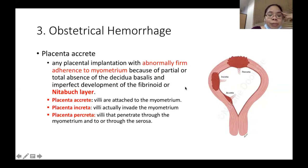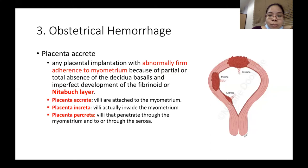The treatment for placenta accreta is cesarean section for delivery of the baby, followed by hysterectomy if it is increta or percreta.